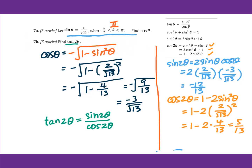Now we plug in: sine 2 theta is negative 12 over 13, and cosine 2 theta is 5 over 13. For this complex fraction, both denominators are 13, so we can reduce. The final answer is negative 12 over 5. This is the answer to 7b.